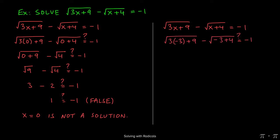Now we can do the same computation with negative 3. Replacing all the x's in the equation with negative 3 gives us the following. 3 times negative 3 gives us negative 9, and in the other radical negative 3 plus 4 gives us 1.